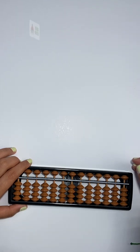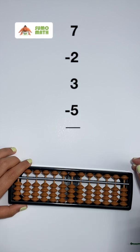We are going to work the problem 7 minus 2 plus 3 minus 5. Start by adding 7 to the abacus by pinching both the top 5 bead and 2 lower beads to the bar with your thumb and index finger.